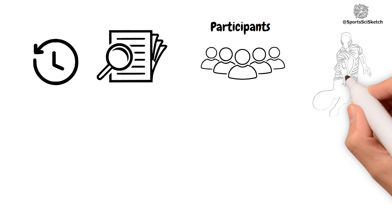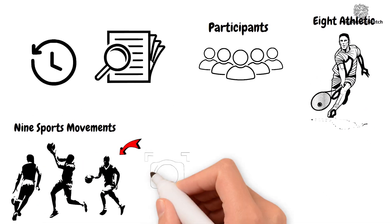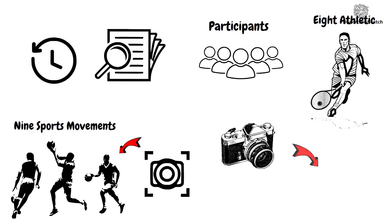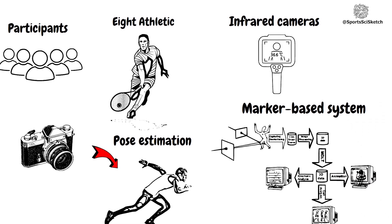In a recent study, five participants performed eight athletic and nine sports movements. Their motions were captured using RGB cameras for pose estimation and infrared cameras for the marker-based system.